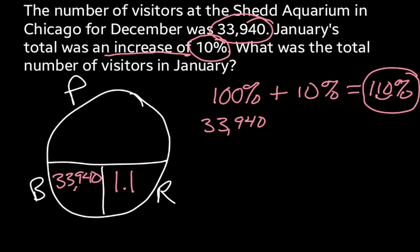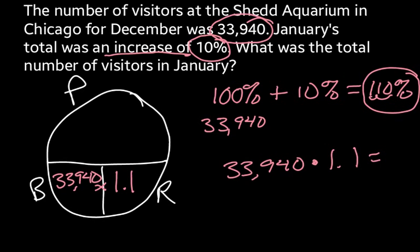All I did was move my decimal point over two places. Now, because these are in my base and rate positions, I'm going to multiply those two numbers together. So it's going to be 33,940 times 1.1, and I get the answer of 37,334 people.